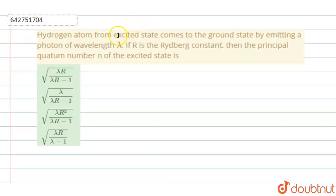Hydrogen atom from excited state comes to ground state by emitting a photon of wavelength lambda. If R is the Rydberg constant, then the principal quantum number N of the excited state will be...